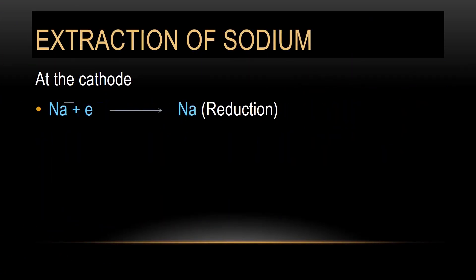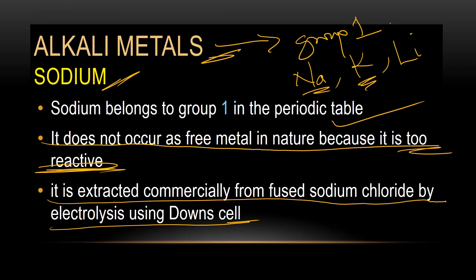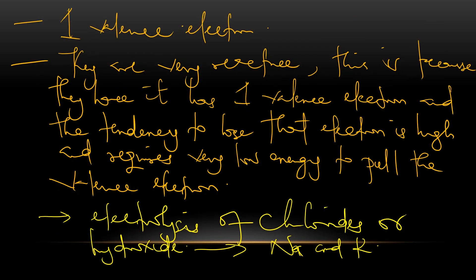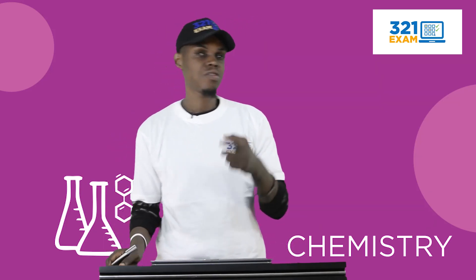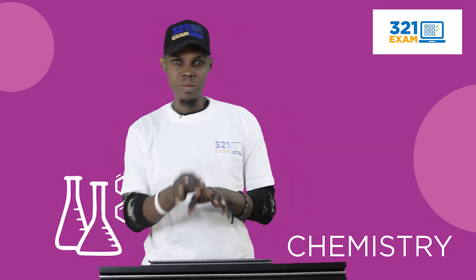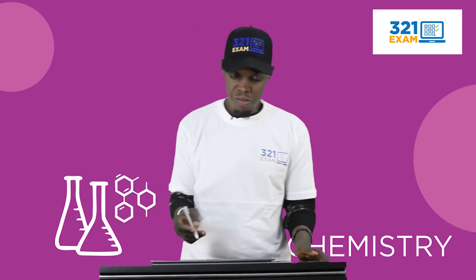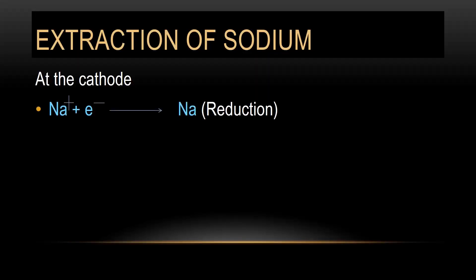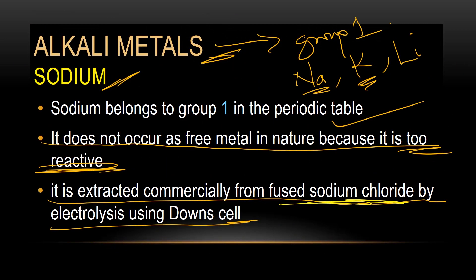Now in extraction of sodium, the solution from fused sodium chloride by electrolysis of Down cells. We are not going to go deep into it because what was specifically given in the syllabus is sodium hydroxide, sodium trioxocarbonate(IV), and sodium chloride. Sodium can be extracted via electrolysis of fused sodium chloride. The process is called the Down cells process.